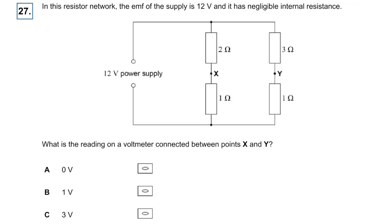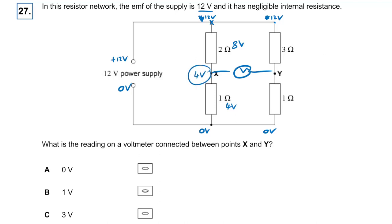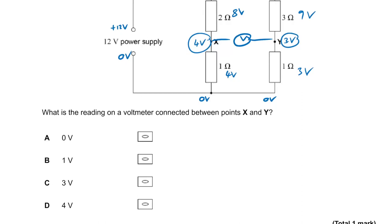Question twenty-seven: EMF of 12 volts, no internal resistance. What's the voltmeter reading between X and Y? On the left branch with resistors in ratio 2:1, the voltage splits 8 volts and 4 volts, so the potential at X is 4 volts. On the right branch with ratio 3:1, it splits 9 volts and 3 volts, so the potential at Y is 3 volts. Potential difference is one volt. The answer is B.